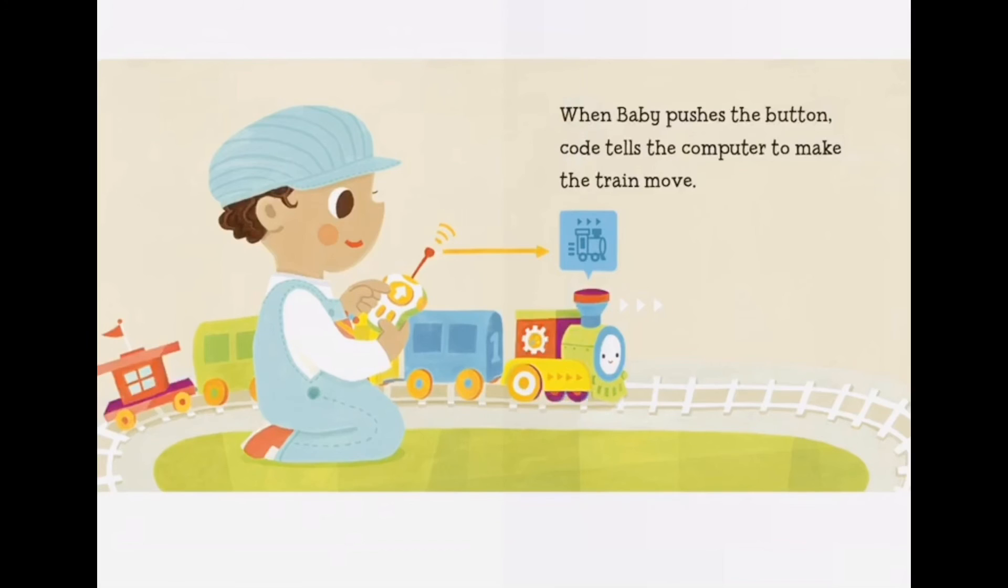When Baby pushes the button, code tells the computer to make the train move.